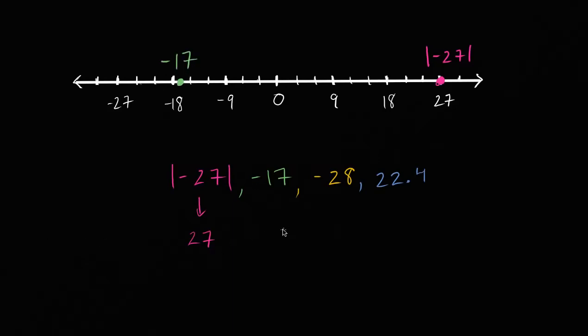And then we have negative 28. So we have negative 27, and each hash mark is 3, so negative 28 is going to be right over there. Negative 28.